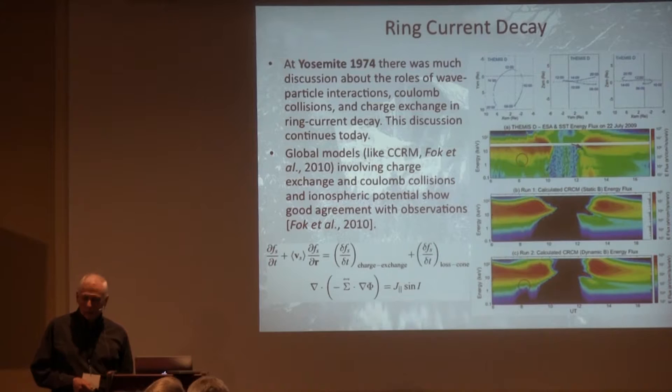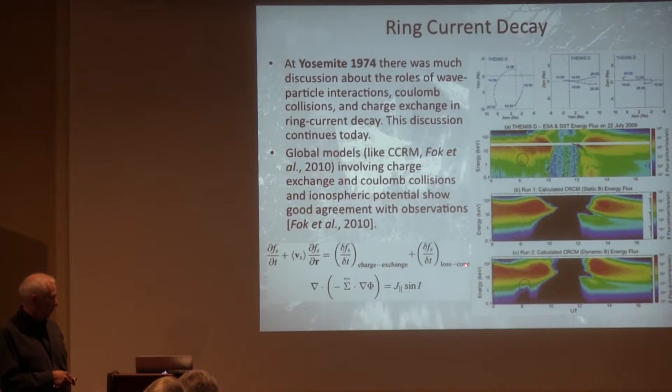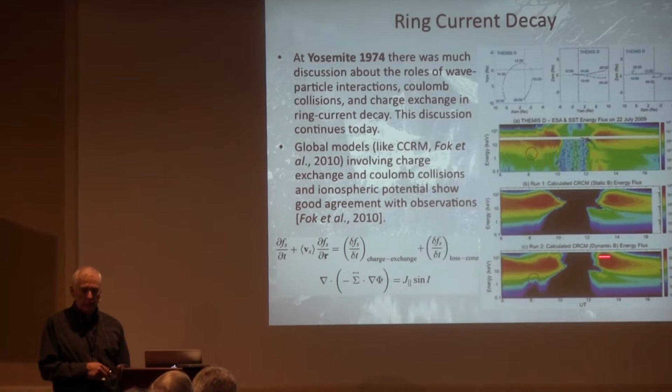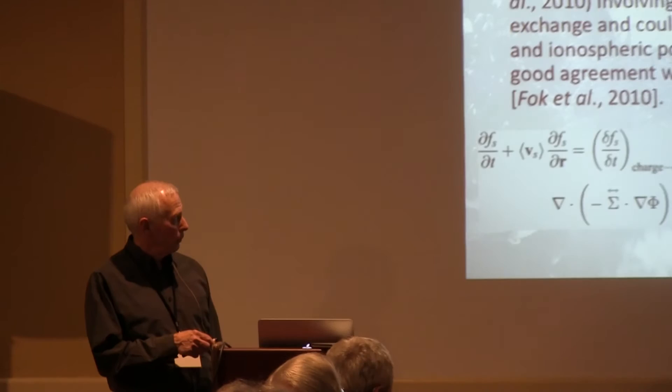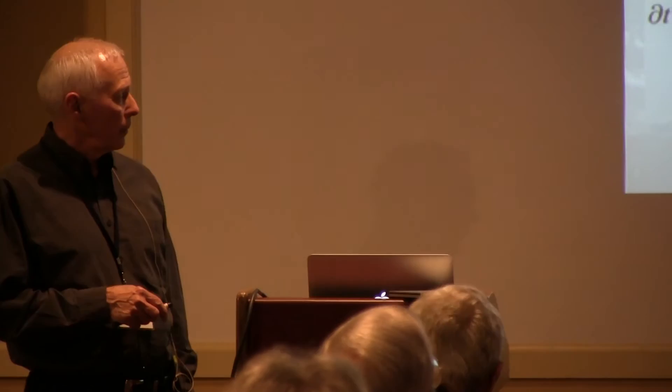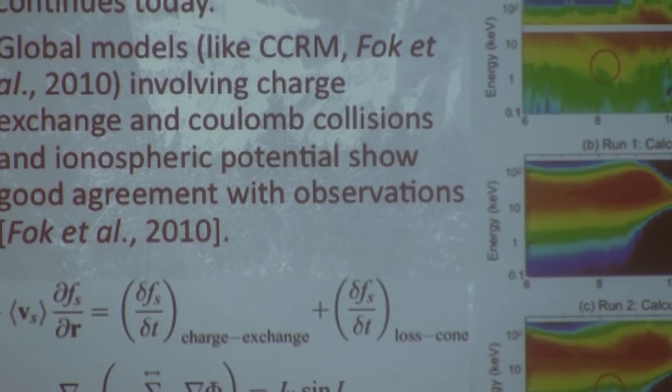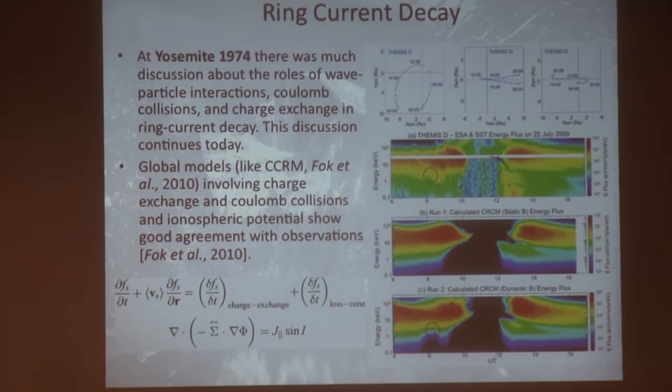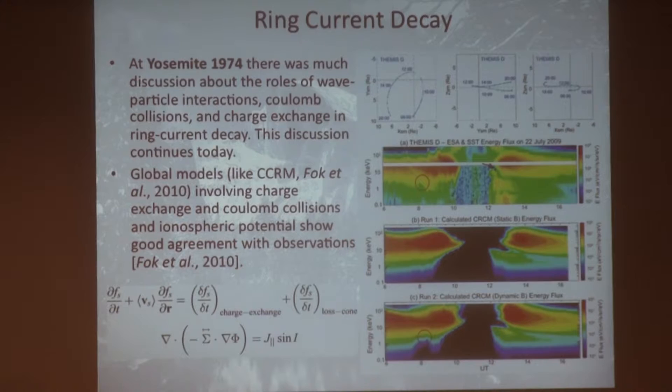They can take data from Themis, Image, or Twins, using mainly charge exchange, some Coulomb collisions, and sometimes cyclotron interactions with electrons — but not the ion interactions. You can see here's the Themis data with some features — a notch, a little bite out. With a static magnetic field you still get this notch, but when they have a self-consistent magnetic field that evolves with the plasma, you see more of the features. So this is fairly successful, though it doesn't involve ion cyclotron interactions — not to say they don't occur.